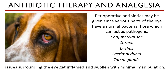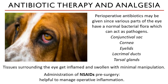Tissues surrounding the eye get easily inflamed and swollen with minimal manipulation. You may notice this yourself when something gets into your eye — you feel irritated, feel pain, and your eye would instantly get red and inflamed, with tears instantly secreted. These processes protect the sensitive ocular tissue from further damage. For analgesia, NSAIDs may be administered before surgery to manage existing inflammation and to anticipate intraoperative inflammation.